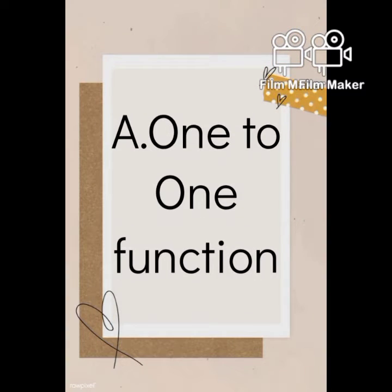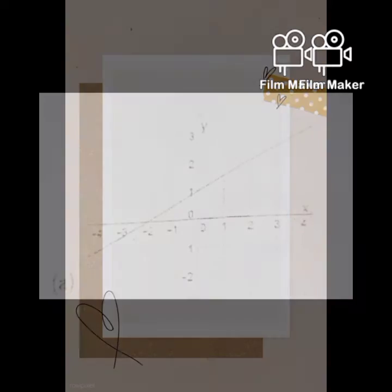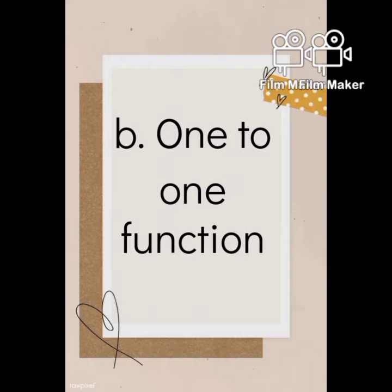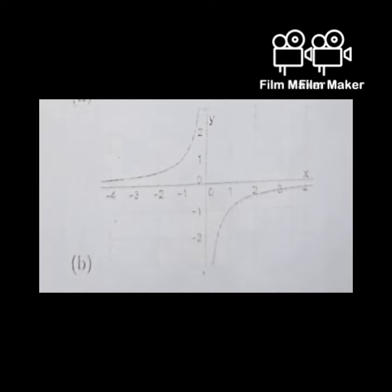Letter A is a one-to-one function because any horizontal line will intersect a diagonal line at most once. Letter B is also a one-to-one function — same reason as letter A, because any horizontal line will intersect a diagonal line at most once.